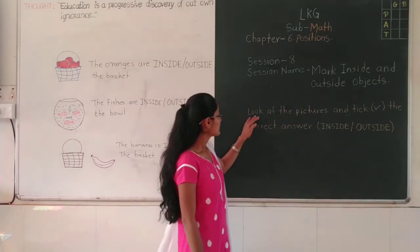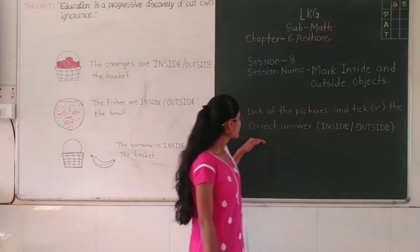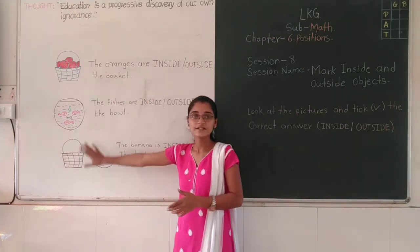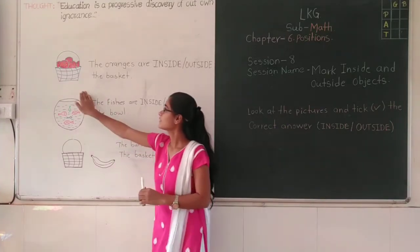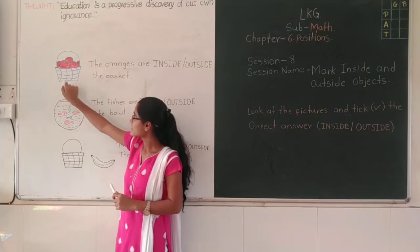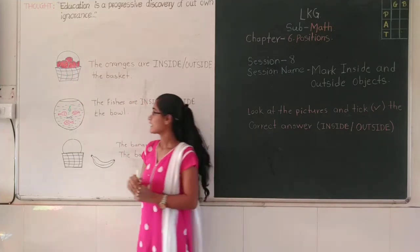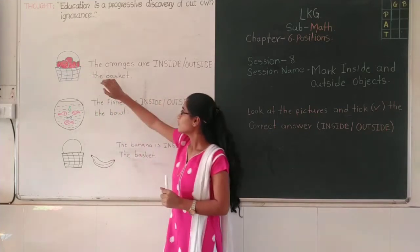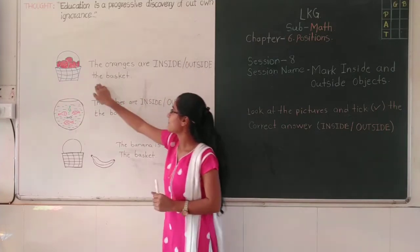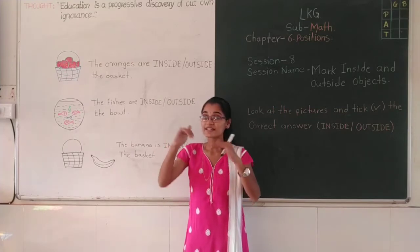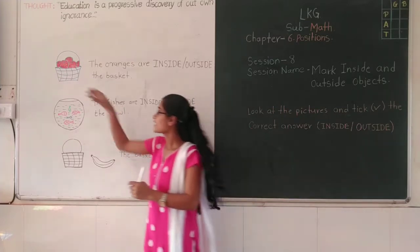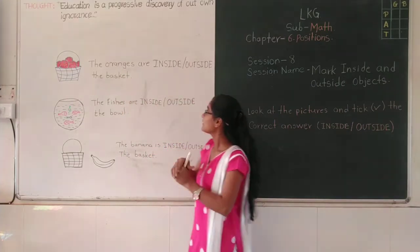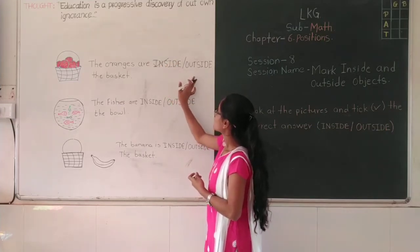Now students, as you can see, look at the pictures and pick the correct answer: inside and outside. Now look at here — some pictures I have drawn. Look at the first picture. One basket is here and inside the basket there are so many oranges. Look at the basket, there are so many oranges inside it. Now, are the oranges inside or outside the basket? Inside, right? Yes. The oranges are inside the basket.